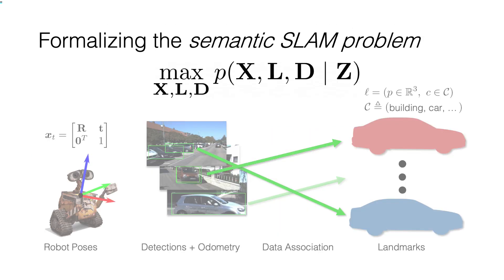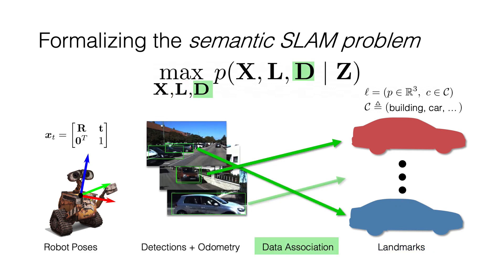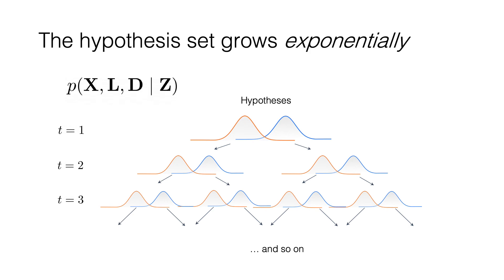To formalize this problem, we consider the following formulation of semantic SLAM with unknown data association. We aim to find the most probable set of robot poses — consisting of 3D positions and orientations of the robot at all points in time — semantic landmarks, which consist of a position in 3D space and a semantic class from a known set of classes, and data associations: discrete variables indicating the correspondence between each measurement and a landmark in the environment. In this work, we use odometry measurements between subsequent robot poses and object detections from a stereo camera, though our proposed approach isn't restricted to this configuration. The primary difficulty associated with this inference problem is that the set of all possible hypotheses representing associations between measurements and landmarks grows exponentially as a robot navigates. Any method for navigation based on environmental landmarks needs to address this issue.